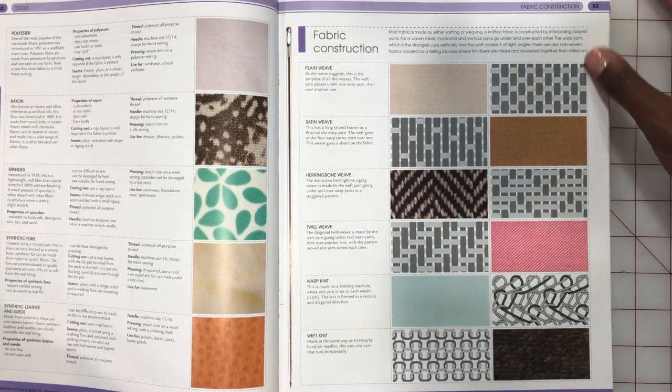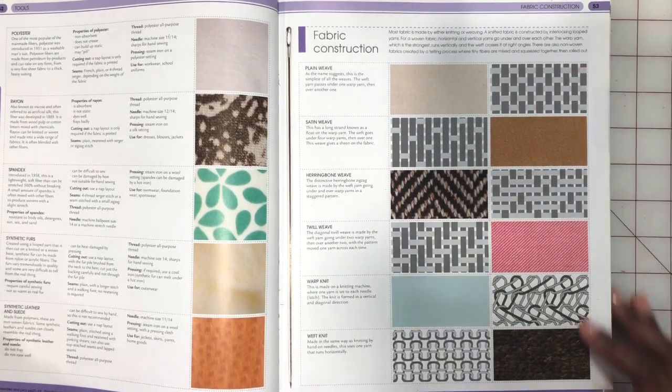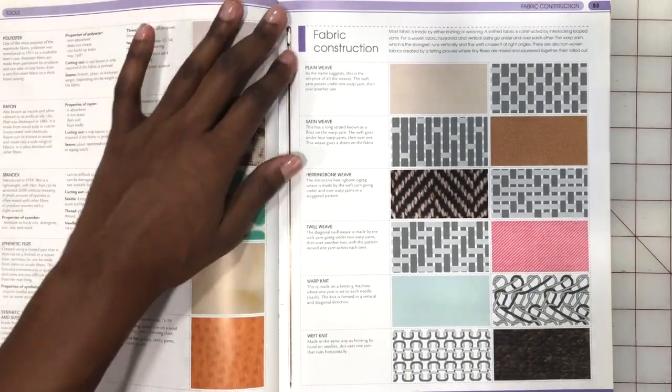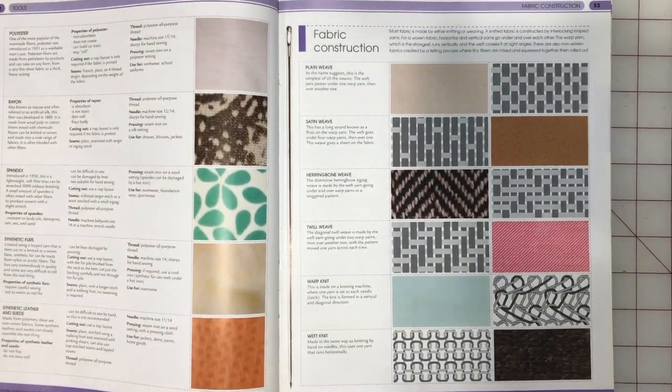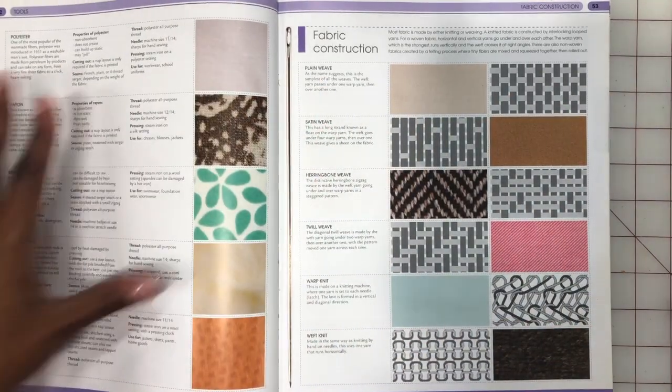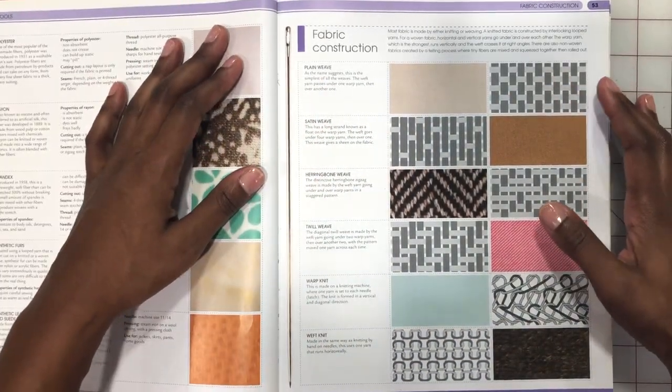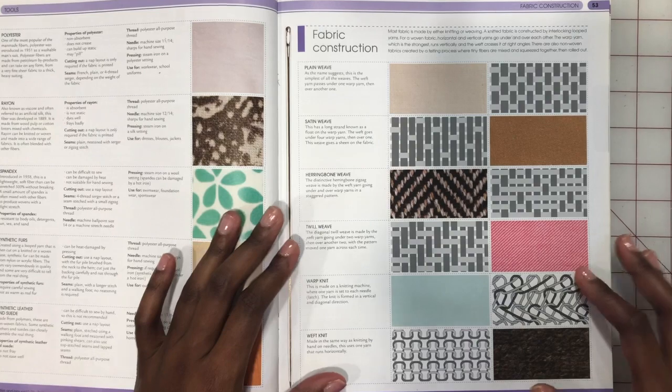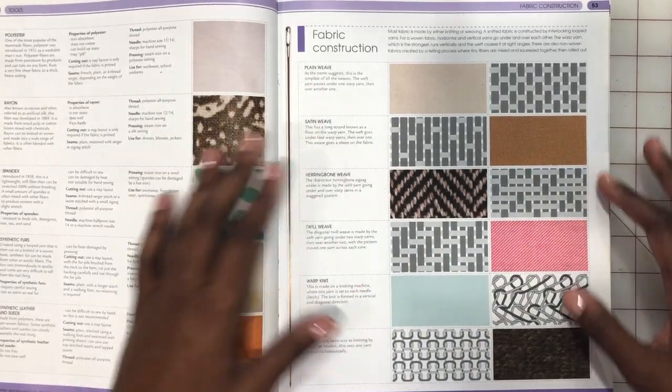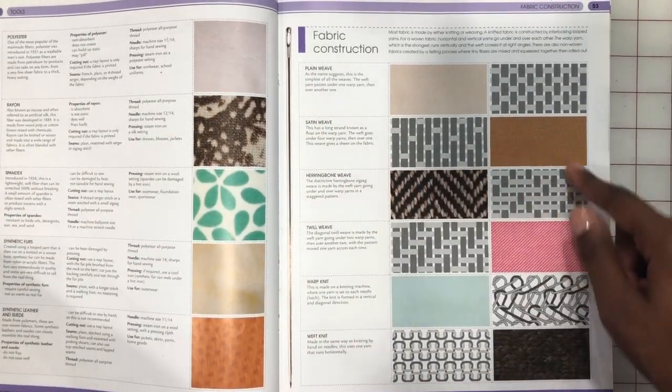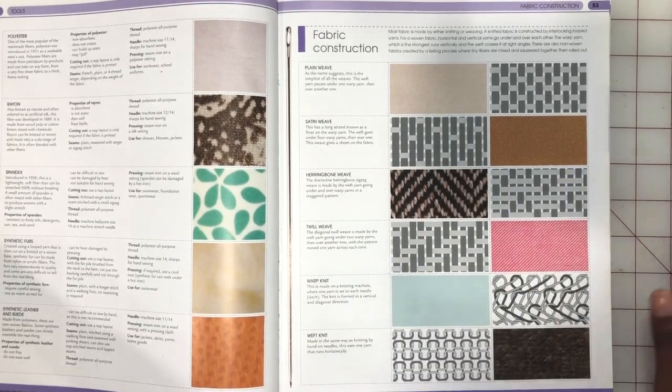And these are just some of the weaves that are used when fabric is being constructed and woven together. Obviously when it's spread out, these are more magnified images and illustrations of what it looks like close up, but when it's pulled together, these little images here show you what it looks like by itself.